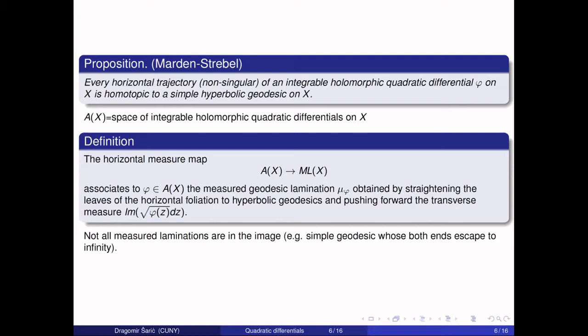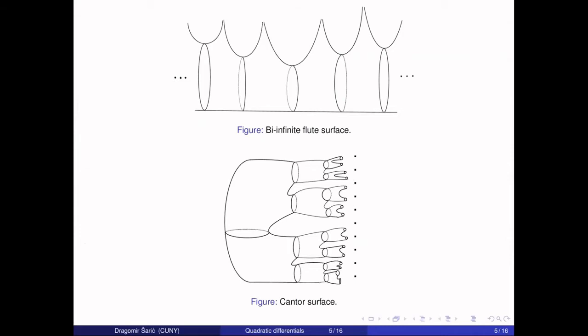The question now is: what is the image of the integrable holomorphic quadratic differentials in the space of measured laminations? The first observation is that not every measured lamination can be realized by the horizontal foliation of a quadratic differential. For example, if you take any geodesic which goes from one end to another, you cannot realize that with an integrable quadratic differential, because realizing that geodesic would require a strip of definite width going from one end to the other, and that would force the surface not to be of the first kind.